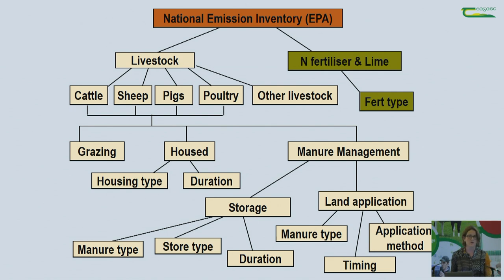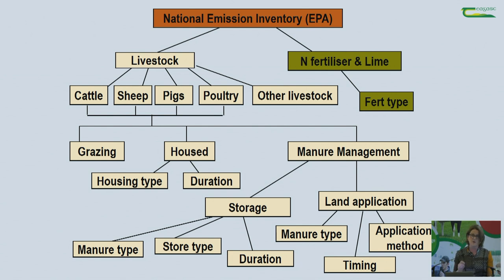I have up here a schematic from the EPA showing how they actually calculate agricultural emissions. At the end of the day, we can talk about implementing technologies like clover, but unless it is accounted for here in the national inventory, it doesn't count towards achieving our targets. Whatever technologies we implement, they have to have an impact in terms of the inventory. Fundamentally there are two key sources of emissions in Irish agriculture: your livestock side and your fertilizer.